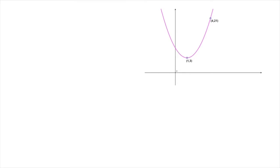Since we know that this is a parabola, we know that it has to have an equation that looks like this: y equals ax squared plus bx plus c. And so our job is to find the coefficients a, b, and c.